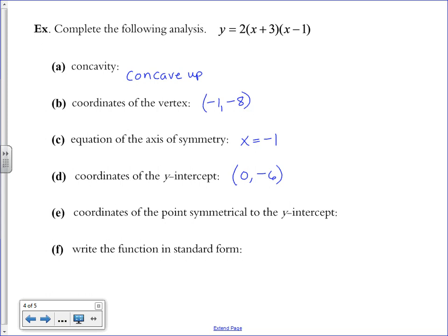Coordinate of the point symmetrical to the Y intercept. If the axis of symmetry is located at negative 1, Y intercept is at 0, I'm going to cross over the axis of symmetry the other way and get negative 2.